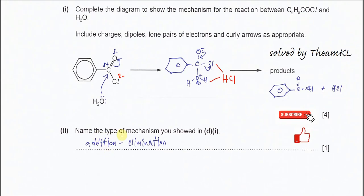Part 2. Name the type of mechanism you showed. The chloride gets eliminated or the chloride gets eliminated. So we say that this is the addition-elimination reaction.